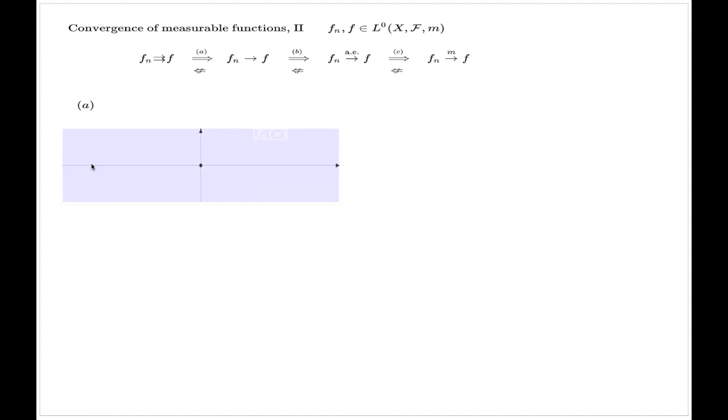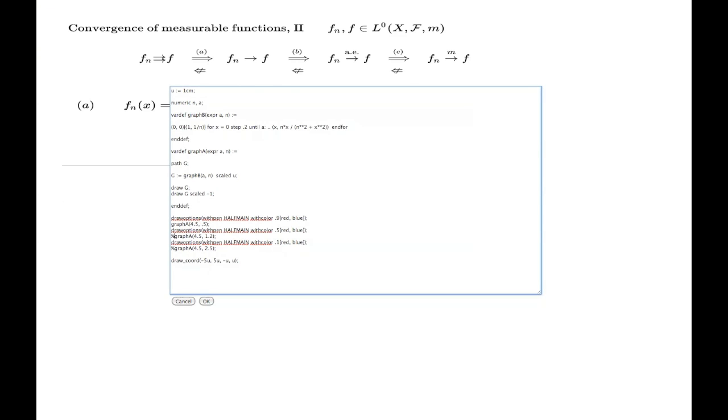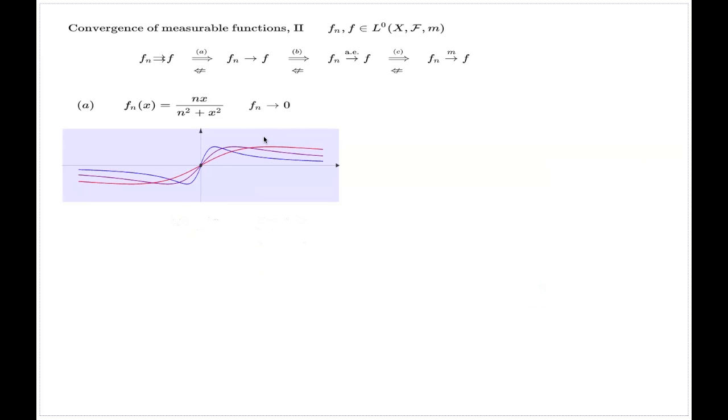To see that the implication A cannot be reversed, the good example is this kind of functions. It's a sequence of functions which converges to zero pointwise. In fact, it is actually pointwise, although I said almost everywhere. This is the typical choice. Just a few representatives of this sequence.